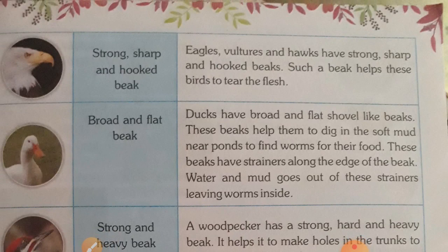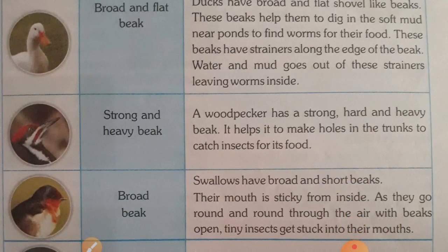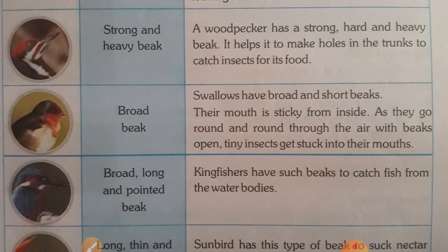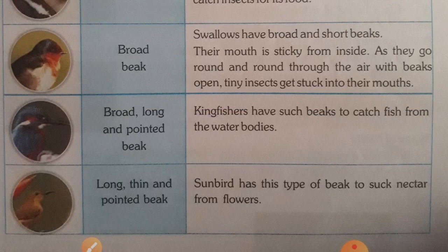Ducks have broad, flat, shovel-like beaks that help them dig soft mud near ponds to find worms. These beaks have strainers along the edges so water and mud go out, leaving worms inside. A woodpecker has a strong, hard, and heavy beak that helps it make holes in tree trunks to catch insects. Swallows have broad and short beaks with a sticky mouth inside to catch tiny insects while flying. A kingfisher has a broad, long, and pointed beak to catch fish from water. The sunbird has a long, thin, and pointed beak to suck nectar from flowers.